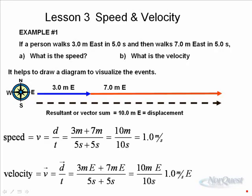Velocity, however, is three meters east plus seven meters east gives me a total of ten meters east in ten seconds, one point zero meters per second east.